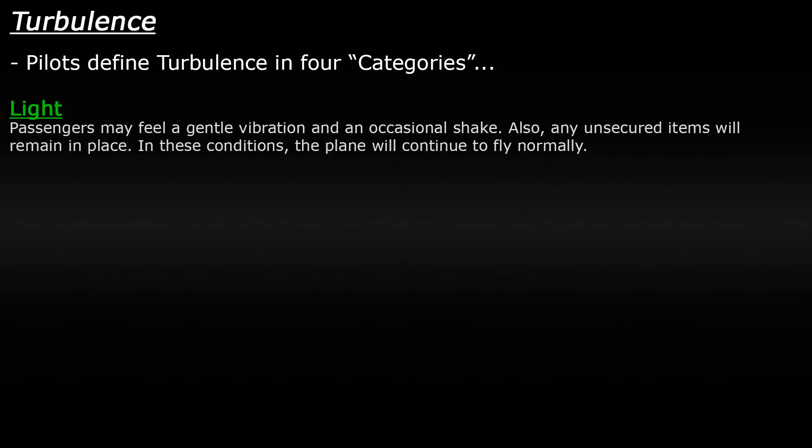So how does this turbulent airflow affect aircraft? Pilots can define turbulence as one of four categories, and these categories are very subjective — meaning they're based on the pilot's judgment. The first category is light turbulence. Passengers may feel a gentle vibration or an occasional shake within the plane, and any unsecured items will remain in place. For example, a bottle of water on the table in front of you will easily remain standing. In these conditions the plane will continue to fly normally.